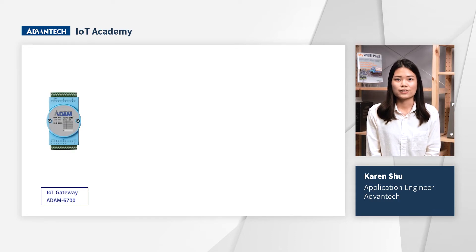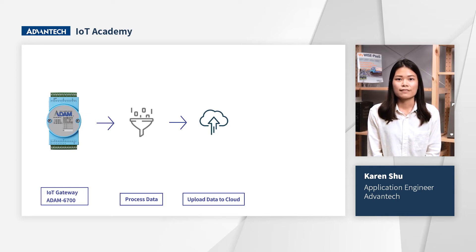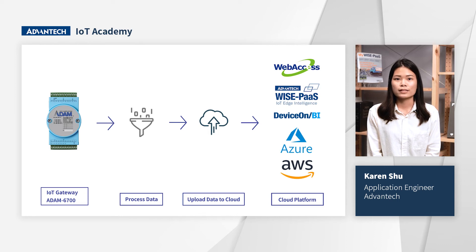ADM 6700 has the ability to process the data inside it and then updates the meaningful data to the cloud to save the cost and bandwidth of the communication with intuitive data access. After getting the I/O values and finishing the calculation, ADM 6700 has good communication ability with different cloud services. Users could upload the data into WebEx, WisePass, DeviceOn BI, Azure, AWS, and so on.